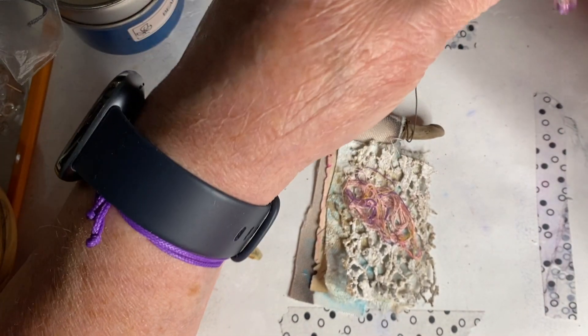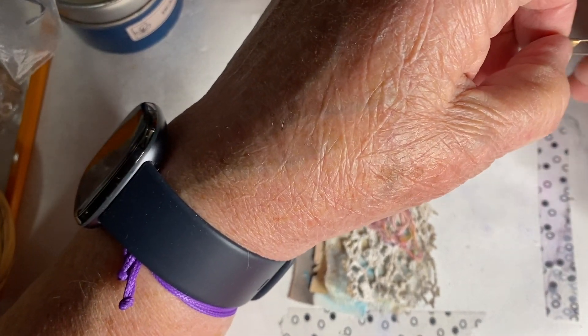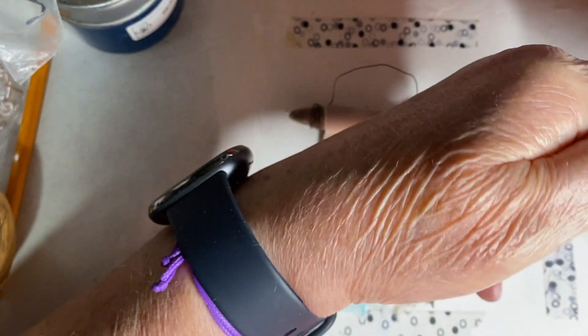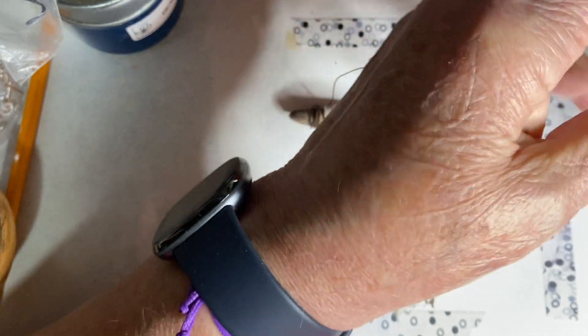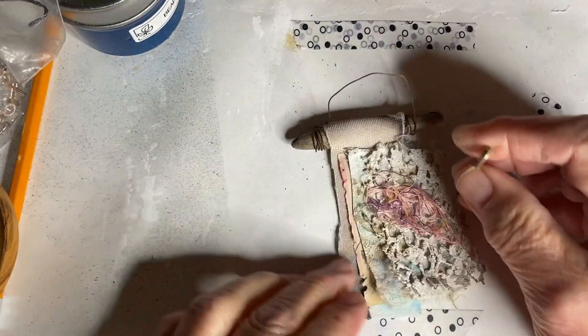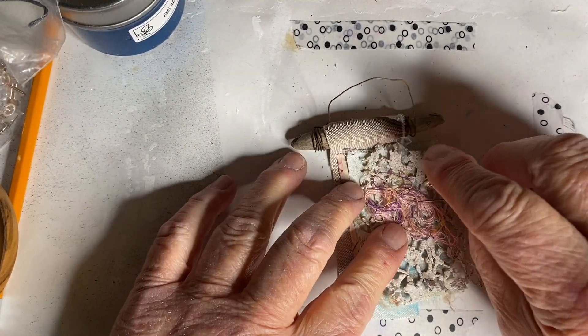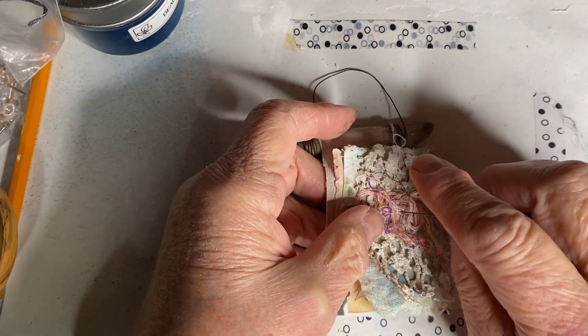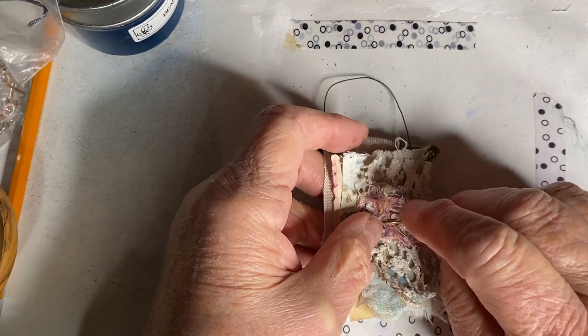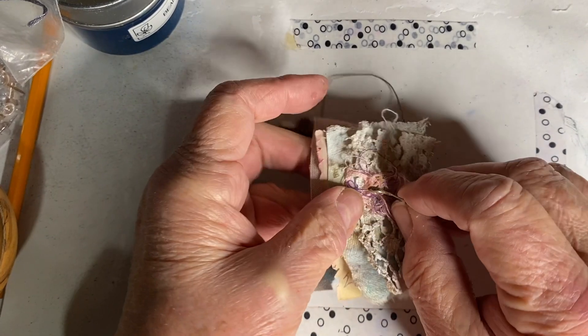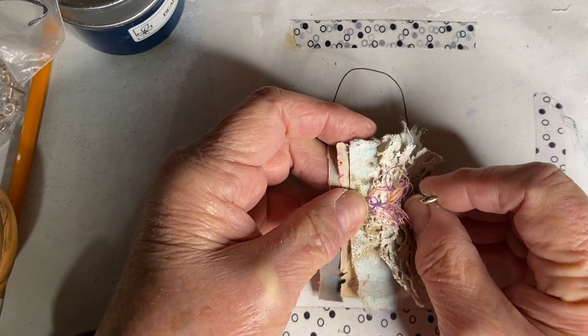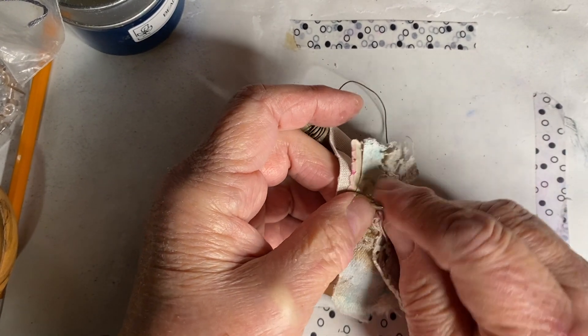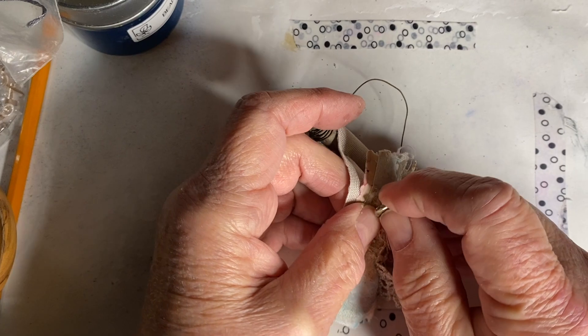I should have used smaller jump rings because this is not going to do what I wanted it to do, which was to stay together, stay, you know, be a permanent piece on there. But I'm going to take it through all the layers, I want to make sure I get the bottom one too, through all the layers. Be careful, this is a rusty safety pin as well.